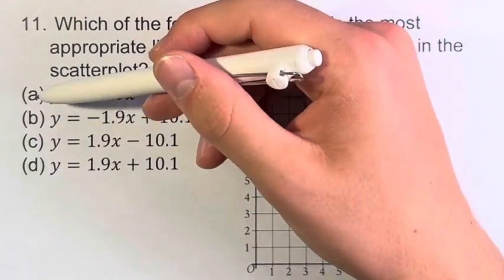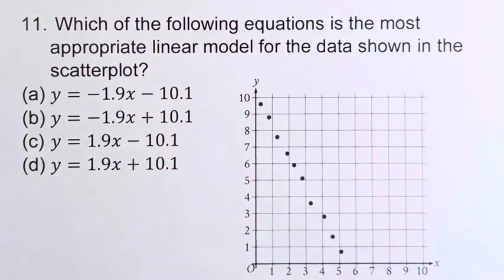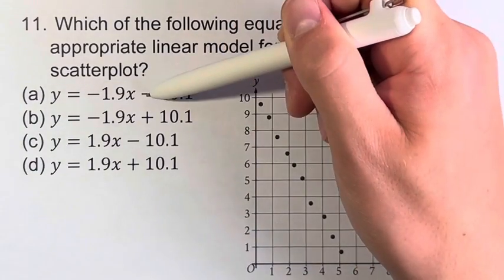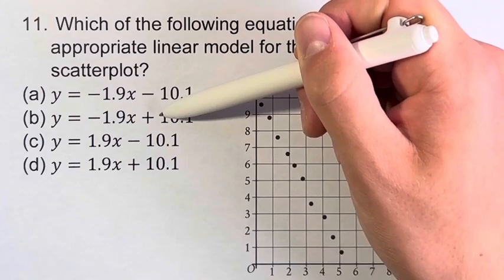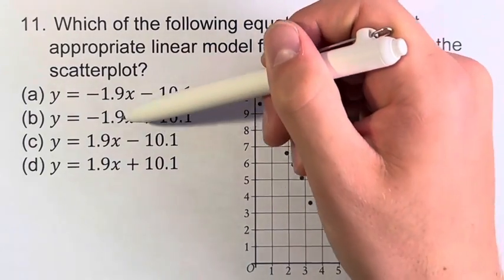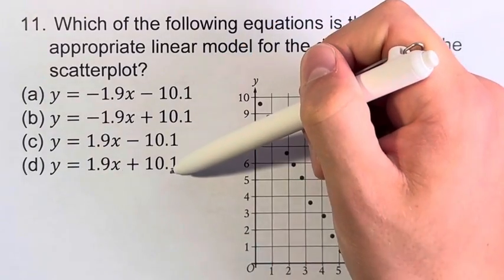In these forms, we have a slope and the y-intercept. For A, they're both negative. For B, the slope is negative and the y-intercept is positive. For C, the slope is positive and the y-intercept is negative. And for D, they're both positive.